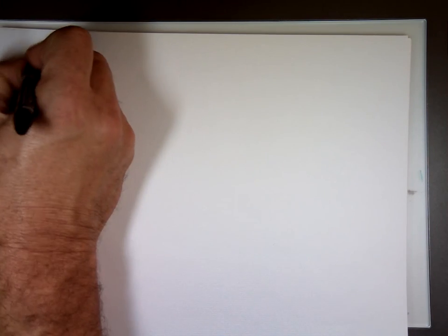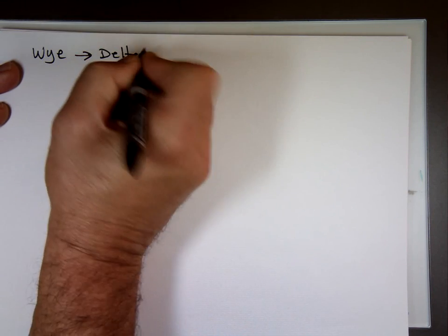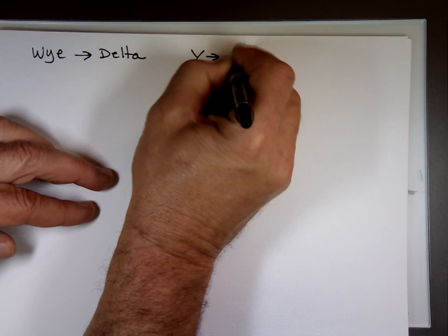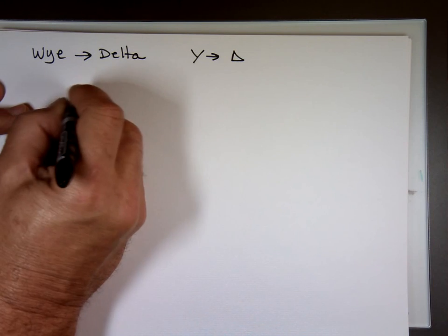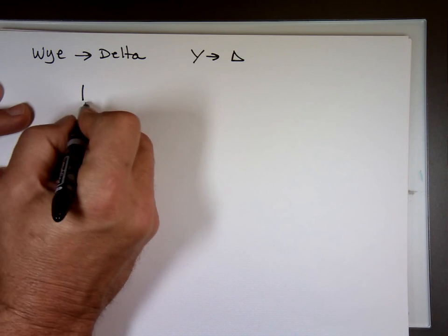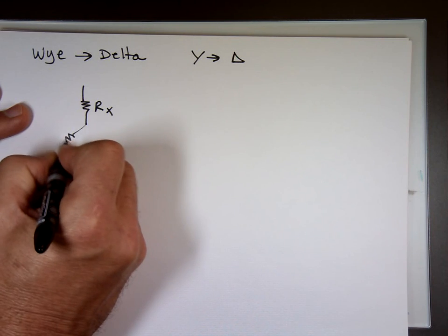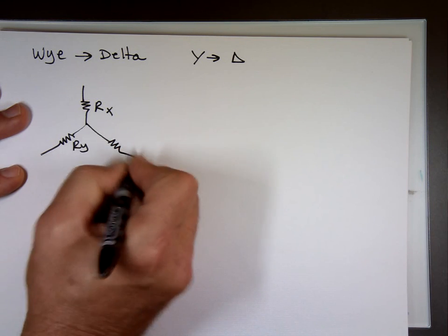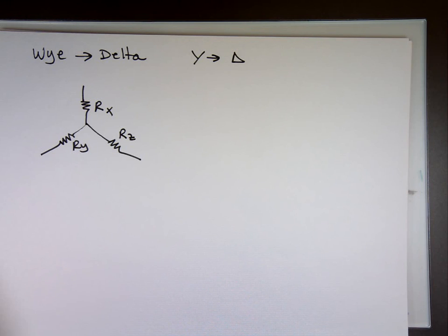Now what about Y to delta? Y to delta like this. If you have Y, I'll make the ones I have always in black and the ones I'm looking for are in blue. I have R sub X, I have R sub Y, and I have R sub Z.